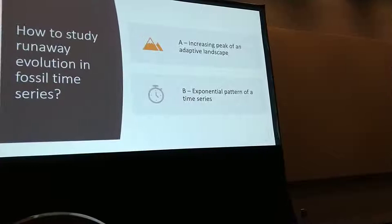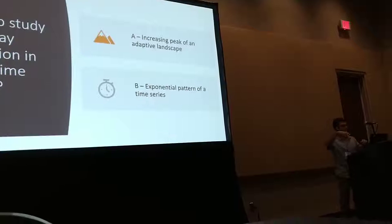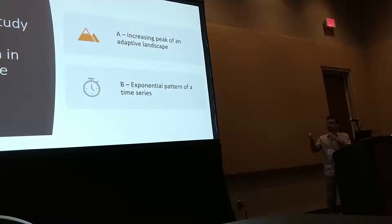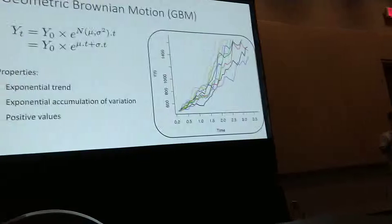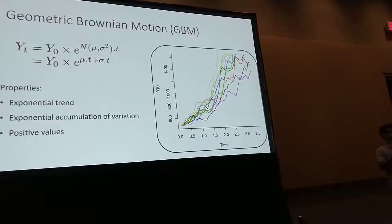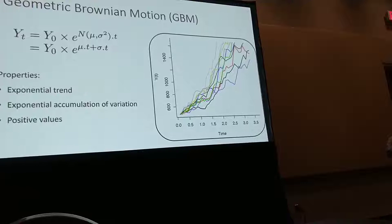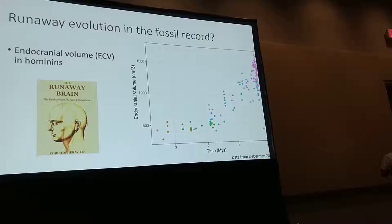Can we study runaway evolution in fossil time series? There are two approaches: one would be to study an increasing adaptive peak in an adaptive landscape where the peak increases through interaction with the evolving trait — but that is a very complicated model. So I turned to the second option: modeling this exponential pattern in a fossil time series using a model known in the literature as geometric Brownian motion (GBM), common in economics and sometimes used in biogeography. It transforms additive evolutionary steps into multiplicative steps — essentially working on a log scale — and can be compared to existing linear-scale models.